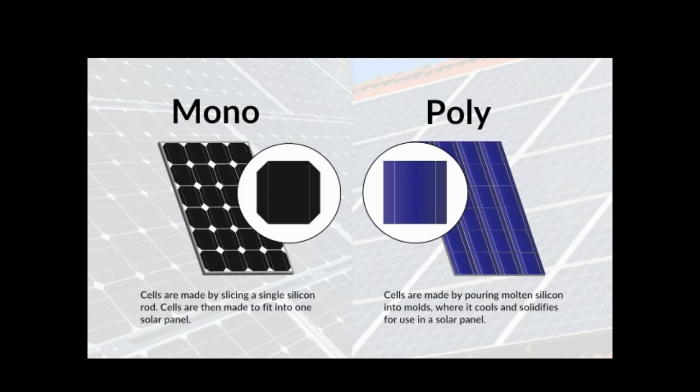This creates a visual difference in the panels. Typically, mono panels are darker than poly panels, but a coating can be added to poly panels giving them a similar appearance to the darker mono panels.